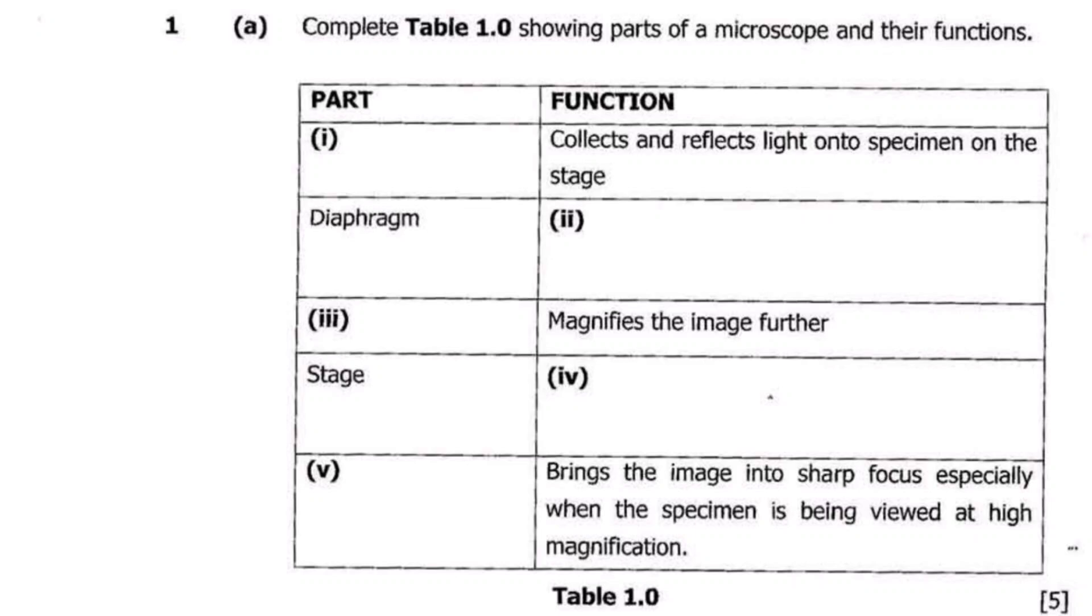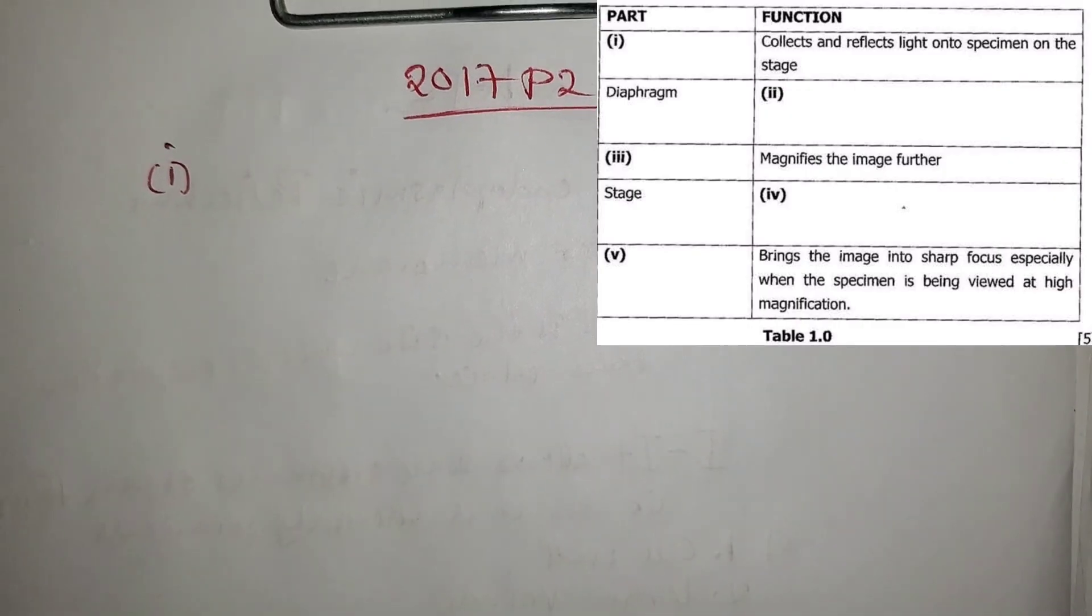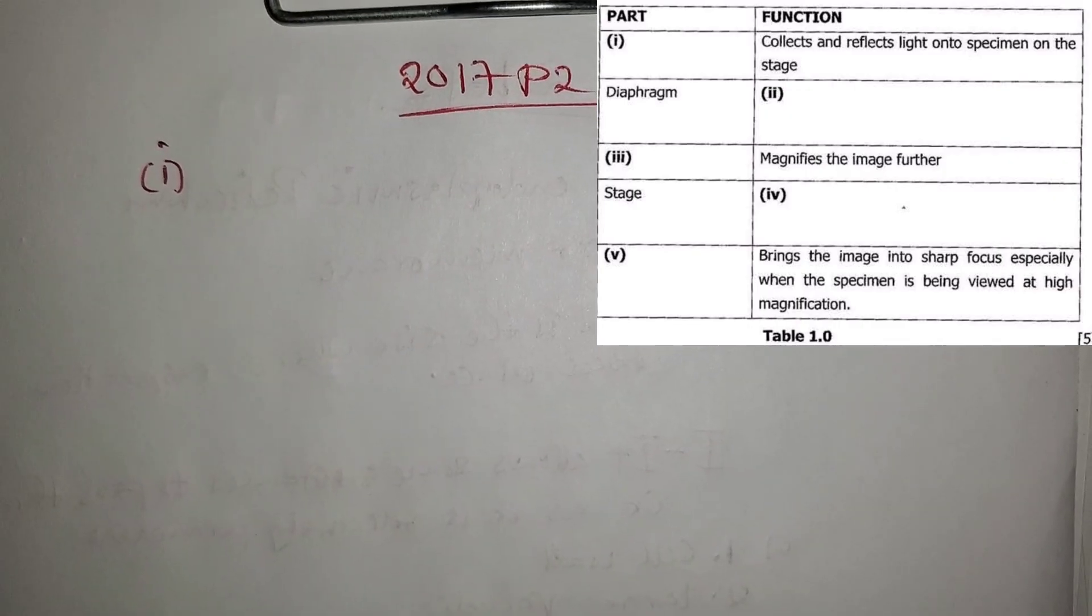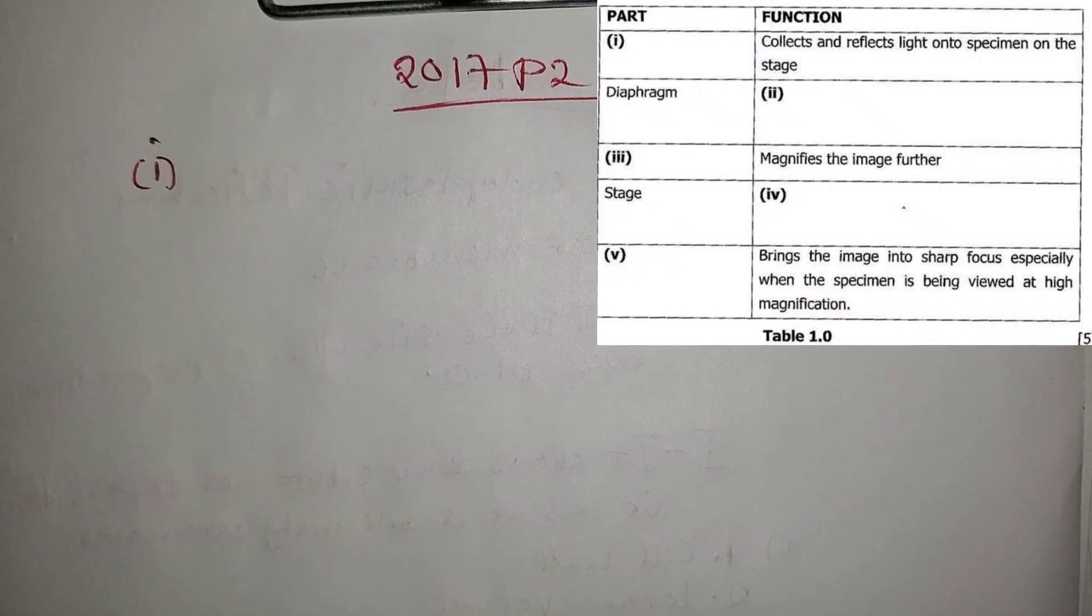Let's answer the first question from GCE 2017 part 2. We are given a table and asked to complete it, showing parts of a microscope and their functions. Part 1 asks: which part collects and reflects light onto the specimen on the stage?